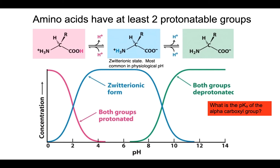That was acetic acid, which has just one protonatable group. Amino acids, however — every single amino acid — has at least two protonatable groups. It's got the alpha-carboxyl group, which can be in a protonated or deprotonated state, and the alpha-amino group, which can also be in a protonated or deprotonated state. It turns out that because of the pKa's of the amino group and the alpha-carboxyl group, under physiological pH, amino acids exist in what is called a zwitterionic state.